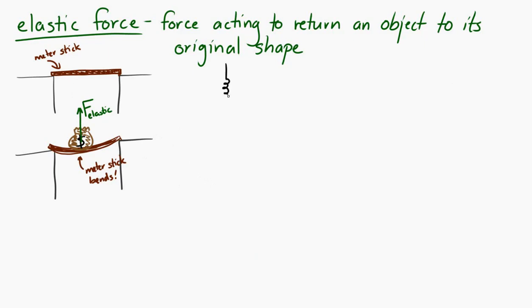Another example is if we have a spring, and then we hang an object from the spring, the spring would stretch. And the elastic force on that object that's hanging from the spring would be upward. It's a force that, again, acts to return the object to its original shape.